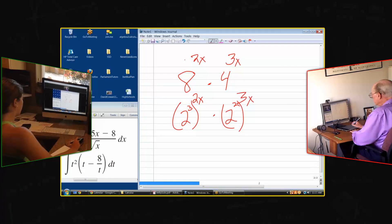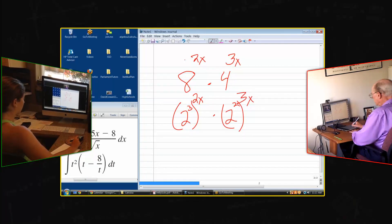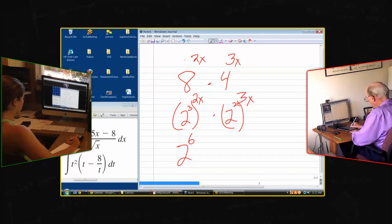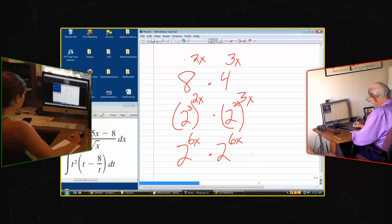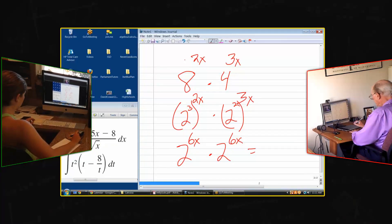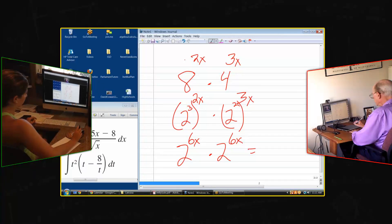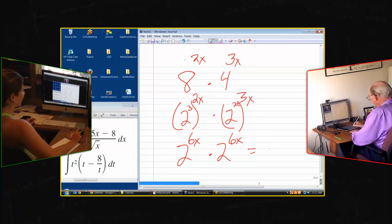And then we get 2 to the 6x in both cases. Applying the rules of exponents, and then what's the final simplified expression? That would go into 12, no, that would be 2 to the 12x, sorry. We would add the exponents.